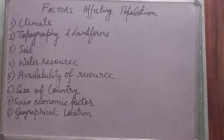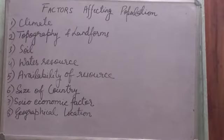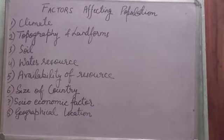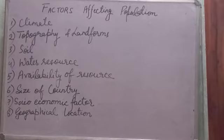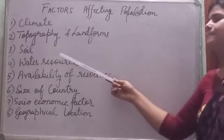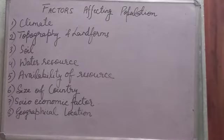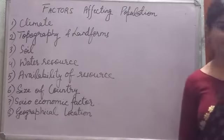The next factor is soil. Soil is also an important factor that contributes to the distribution of population. Fertile soil produces large amounts of rice, wheat, pulses, oats, and barley. That is why river valley areas are densely populated. For example, the northern plains of India are densely populated because of the fertile soil there.